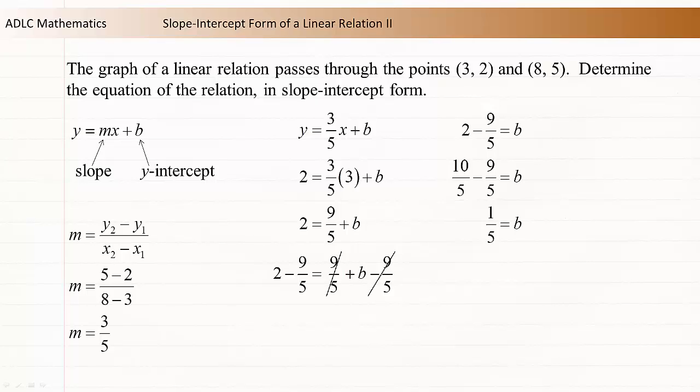We can substitute this b value into the slope-intercept equation. The equation of the relation is y = (3/5)x + 1/5.